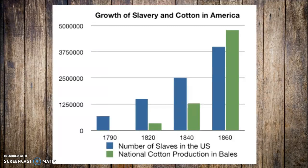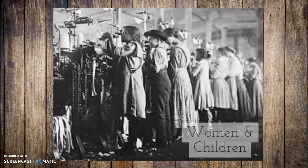Slavery was outlawed in Britain in 1833, but it wasn't until 1863 that slavery was outlawed in the United States. We know for sure that the industrial revolution impacted the lives of Africans and those forced into slavery. Women and children especially were impacted by the industrial revolution.